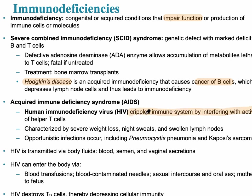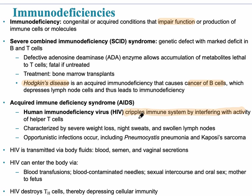HIV works by crippling the immune system — it's a virus that leads to infection and makes the body much more susceptible to infections. Those infections could be pneumonia, which can kill the person, or Kaposi's sarcoma — swollen lesions all over the body (Freddie Mercury had sarcomas all over his body before he died). HIV can lead to AIDS. Technically they're not the same thing — AIDS is a condition that develops when there's serious damage to the immune system. HIV specifically works by destroying the T-helper cells.